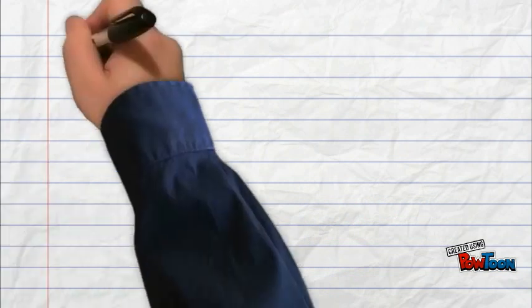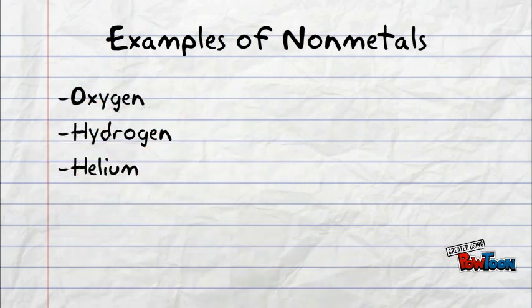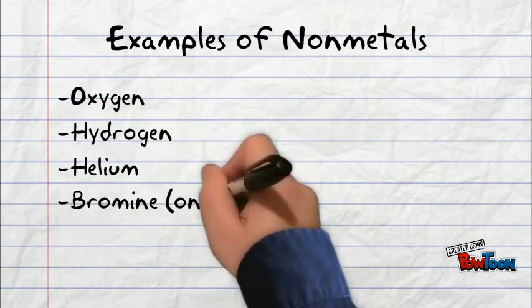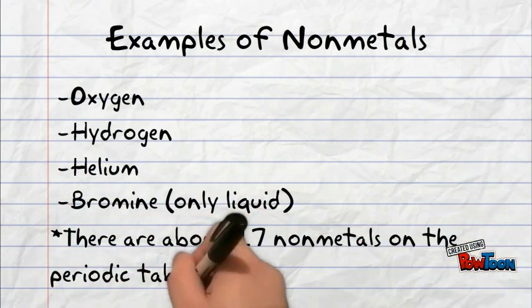Examples of nonmetals include oxygen, hydrogen, and helium. Bromine would be the only liquid in the category of nonmetals, and there are only about 17 nonmetals on the periodic table.